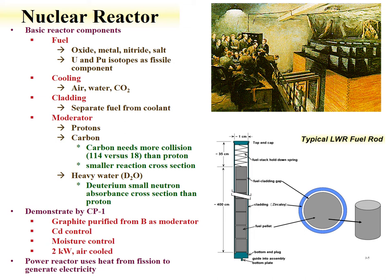The heat from reactors is used to produce electricity. Fission from the fuel produces around 200 MeV of energy, and that energy is used to drive a turbine to produce electricity. A typical fuel rod for a light water reactor has uranium with a cladding material, and there's a gap between the cladding and the uranium fuel. This gap allows changes induced by the fission process in the uranium fuel to not directly influence the cladding material.